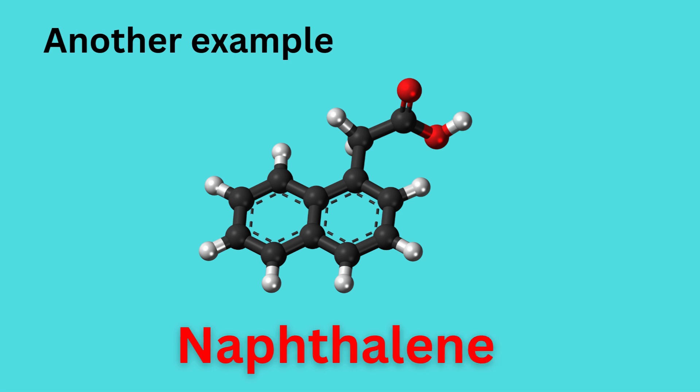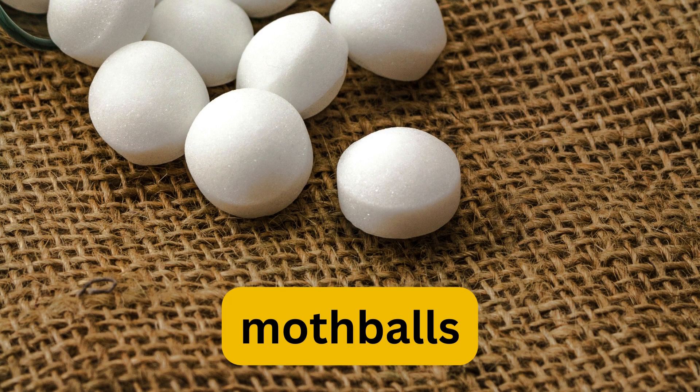Another well-known example of sublimation is naphthalene, which is an organic compound. Naphthalene is usually found in pesticides such as moth balls. At a temperature of 176 degrees Fahrenheit, naphthalene sublimates to form vapours. It desublimates at cool surfaces to form needle-like crystals.